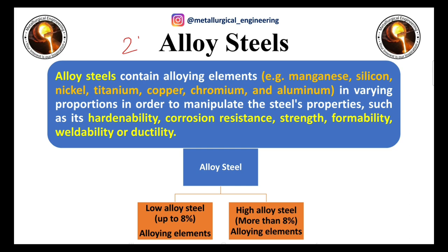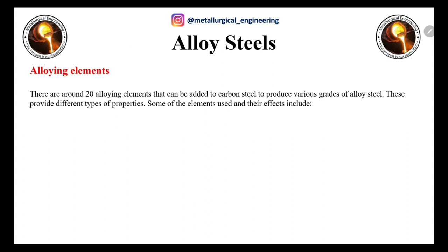The second type is alloy steel. Alloy steels contain alloying elements like manganese, silicon, nickel, titanium, copper, chromium, and aluminium in varying proportions to manipulate steel properties such as hardenability, corrosion resistance, strength, weldability, and ductility. Alloy steels are categorized into two types: low alloy steel (up to 8% alloying elements) and high alloy steel (more than 8%). There are around 20 alloying elements that can be added to carbon steel.